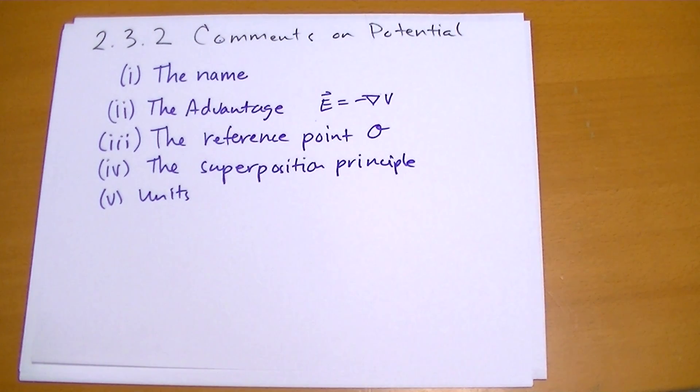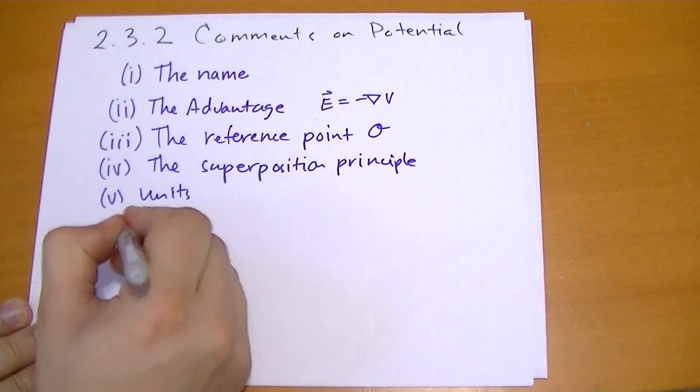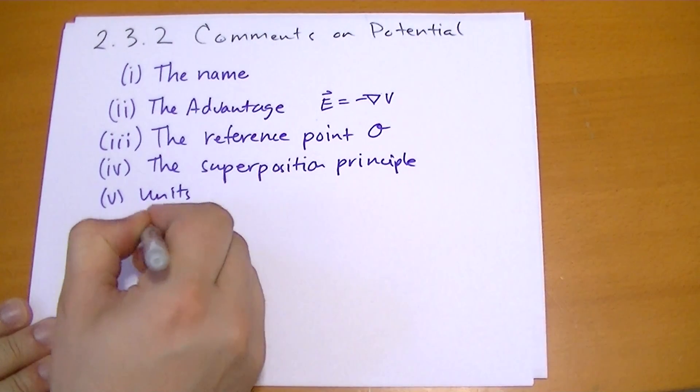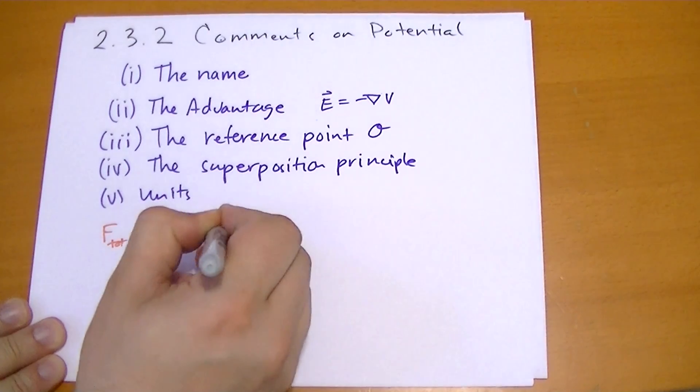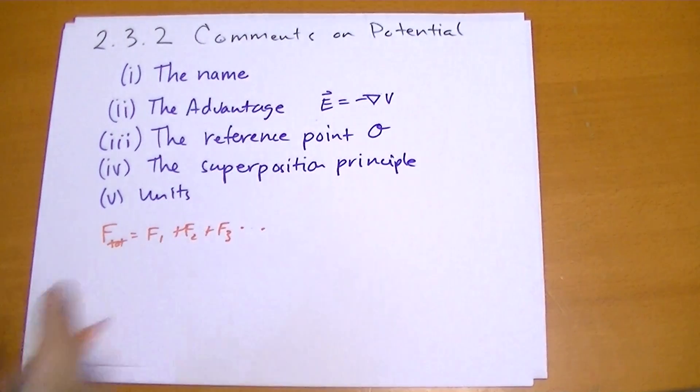The superposition principle. The superposition principle starts with the fact that you can add forces together. We can have the total force on an object equal to the first force plus the second force, and so on. Each of these forces can be calculated independently of one another, especially given the way that Coulomb's law works.